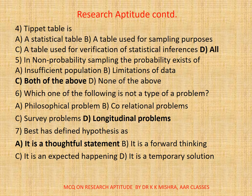Question 4. Type A table is: a. A statistical table. b. A table used for sampling purposes. c. A table used for verification of statistical inferences. d. All. The correct option is d. All.